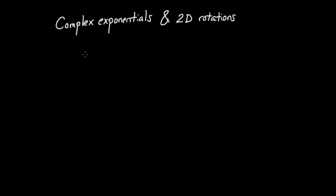Before talking about complex exponentials, I'd like to first review the complex numbers, denoted by the symbol C. The complex numbers are the set given by the pairing of two real numbers, let's call them A and B, where B is being multiplied by this imaginary unit called i. This imaginary unit i has the essential feature that i squared is equal to minus one. The A here, this first component, is called the real part, and B is called the imaginary part.